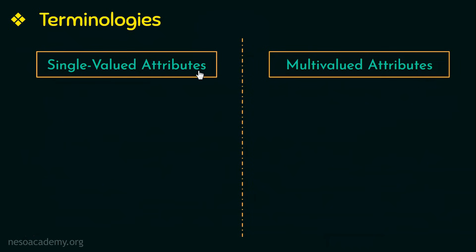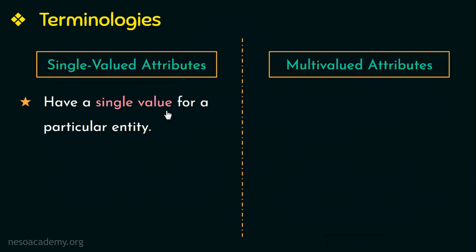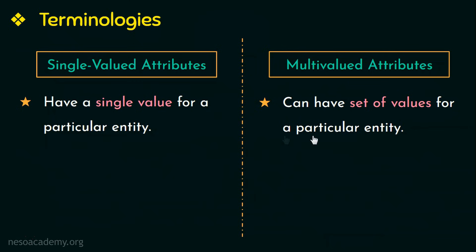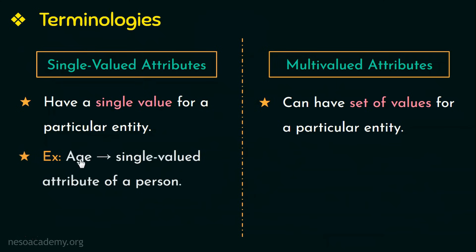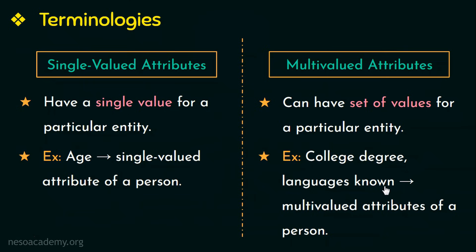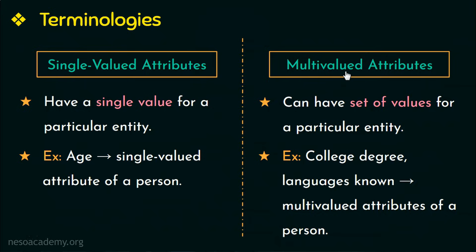Next we have single-valued attributes and multi-valued attributes. Single-valued attributes are attributes that have just one value for a particular entity, whereas multi-valued attributes can have a set of values for a particular entity. An example of a single-valued attribute is age — a particular person can have only one value for this attribute. Examples of multi-valued attributes are college degree and languages known, since a person can have more than one college degree and can know more than one language.